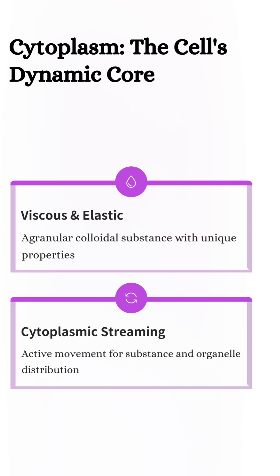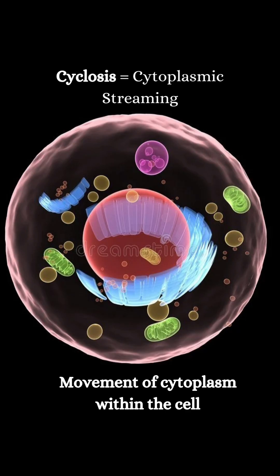It is a viscous, elastic and granular colloidal substance and shows cytoplasmic streaming or cyclosis — an active movement of the cytoplasm that helps in the distribution of substances and organelles.